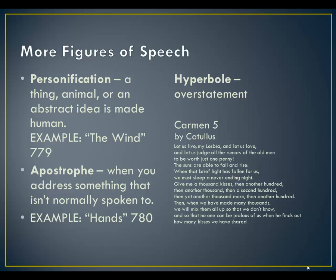One of the most famous acts of hyperbole is found in an ancient poem by Catullus, a Roman poet. This is Carmen 5 — Carmen in Latin means poem, so Poem 5: 'Let us live, my Lesbia, and let us love / And let us judge all the rumors of the old men to be worth just one penny / The suns are able to fall and rise / When that brief light has fallen for us / We must sleep a never-ending night / Give me a thousand kisses, then another hundred, then another thousand, then a second hundred, and then yet another thousand more, then another hundred / Then when we have made many thousands we will mix them all up so that we don't know, and so that no one can be jealous of us when he finds out how many kisses we have shared.' So obviously the hyperbole is in the amount of kisses that are added up in this poem.